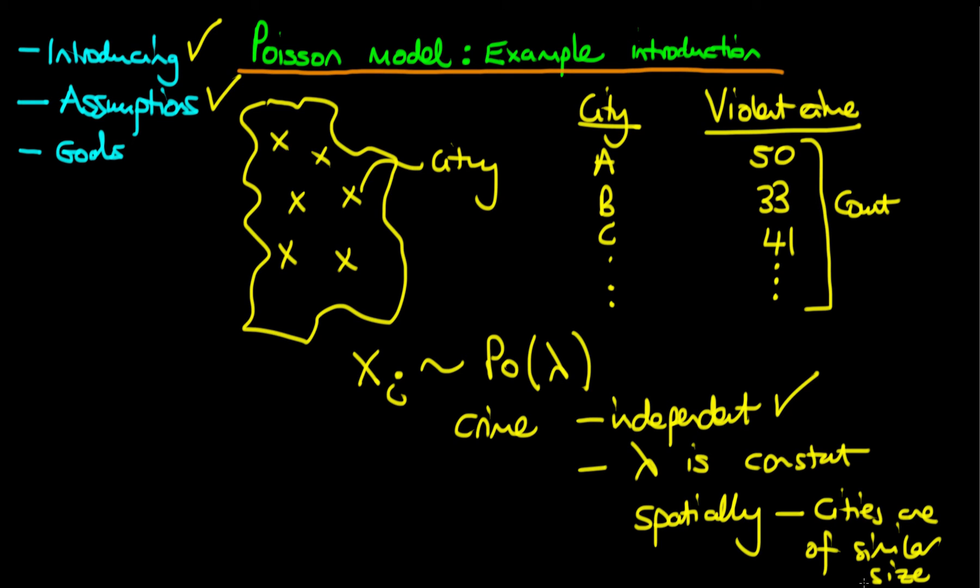And we might also like to assume that they've got similar sorts of characteristics. Perhaps they've got similar levels of unemployment, perhaps the demographics are similar in the cities. Because any of those differences, we might question whether it is okay to model the situation assuming that lambda is constant across the different cities. And actually, later on, we're going to relax this assumption and introduce a Poisson regression model. But for now, we're going to assume that lambda is constant spatially.